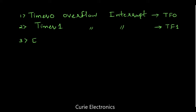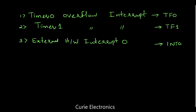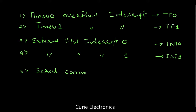Then we have External Hardware Interrupt 0, which is INT0. Next, External Hardware Interrupt 1, which is INT1. And finally, Serial Communication Interrupt. These are the user interrupts of the 8051 microcontroller.